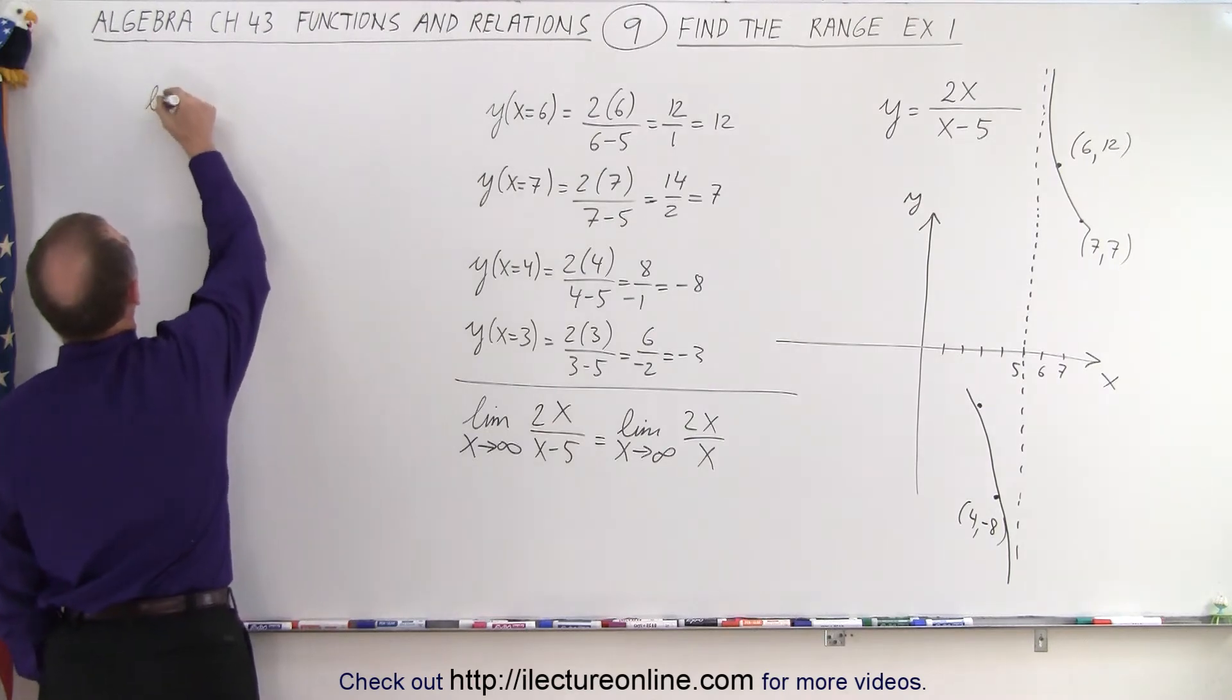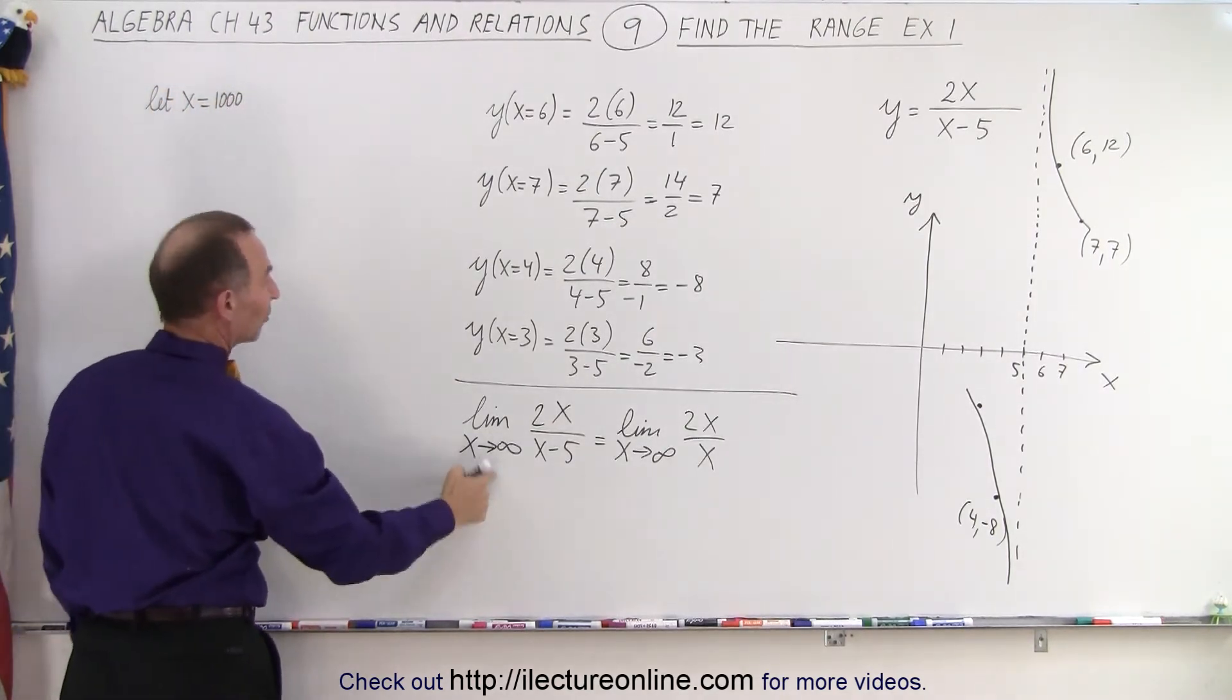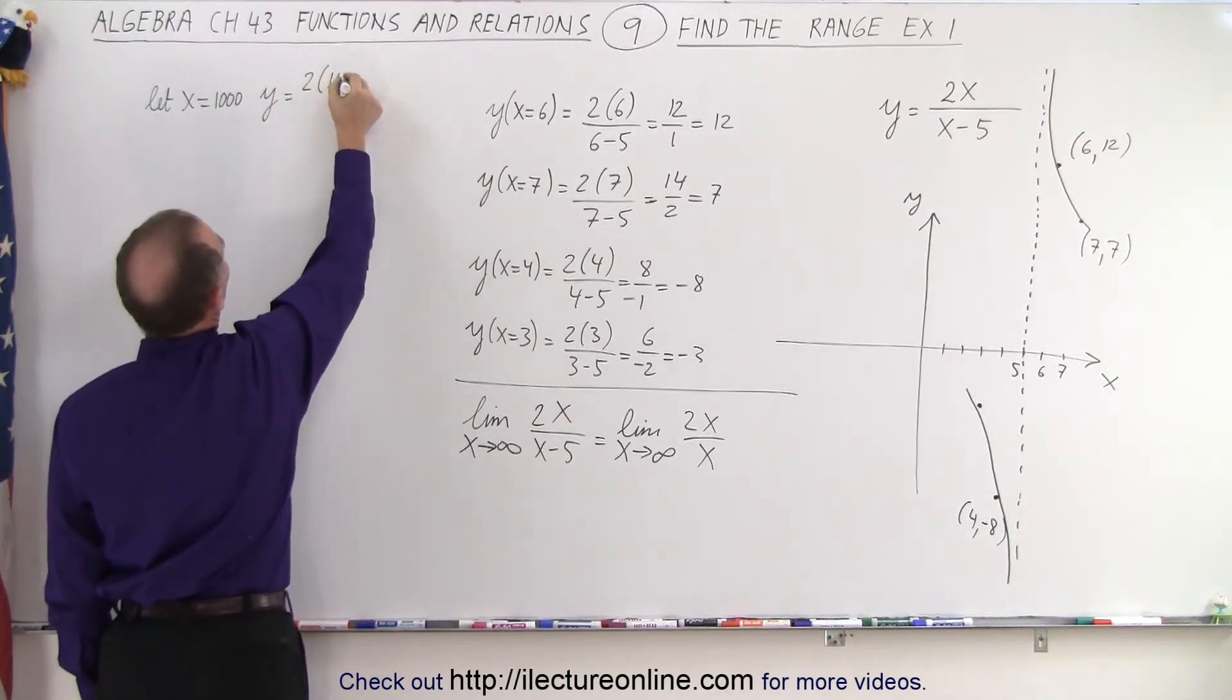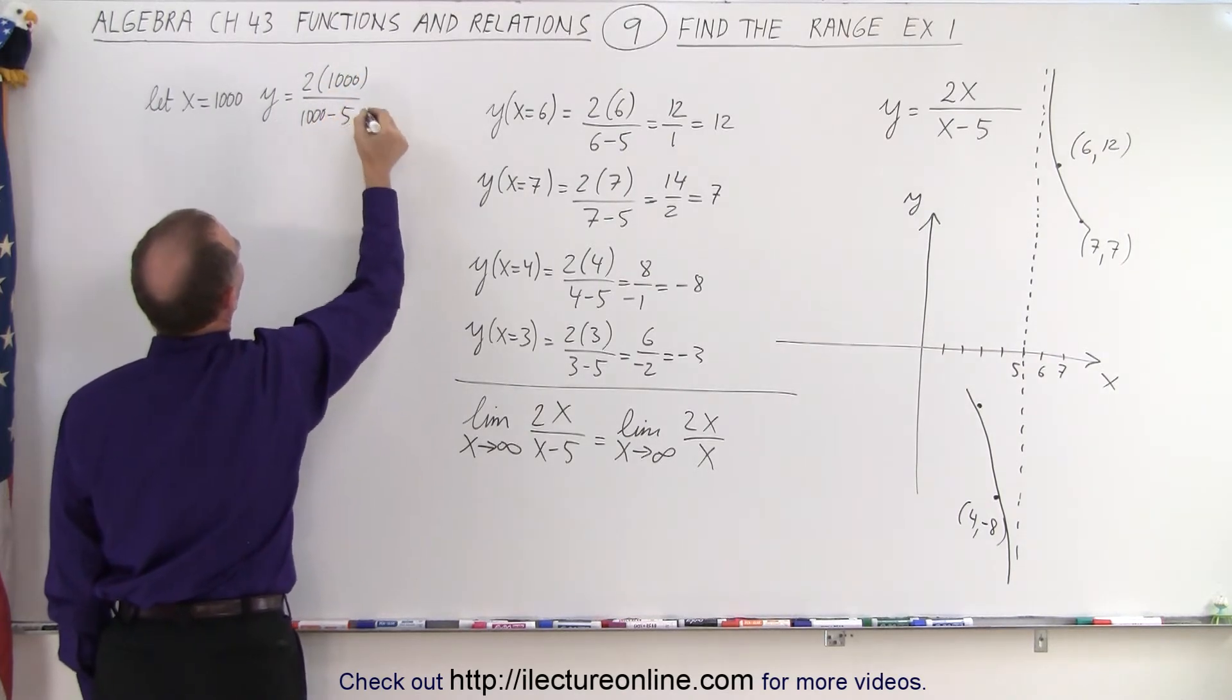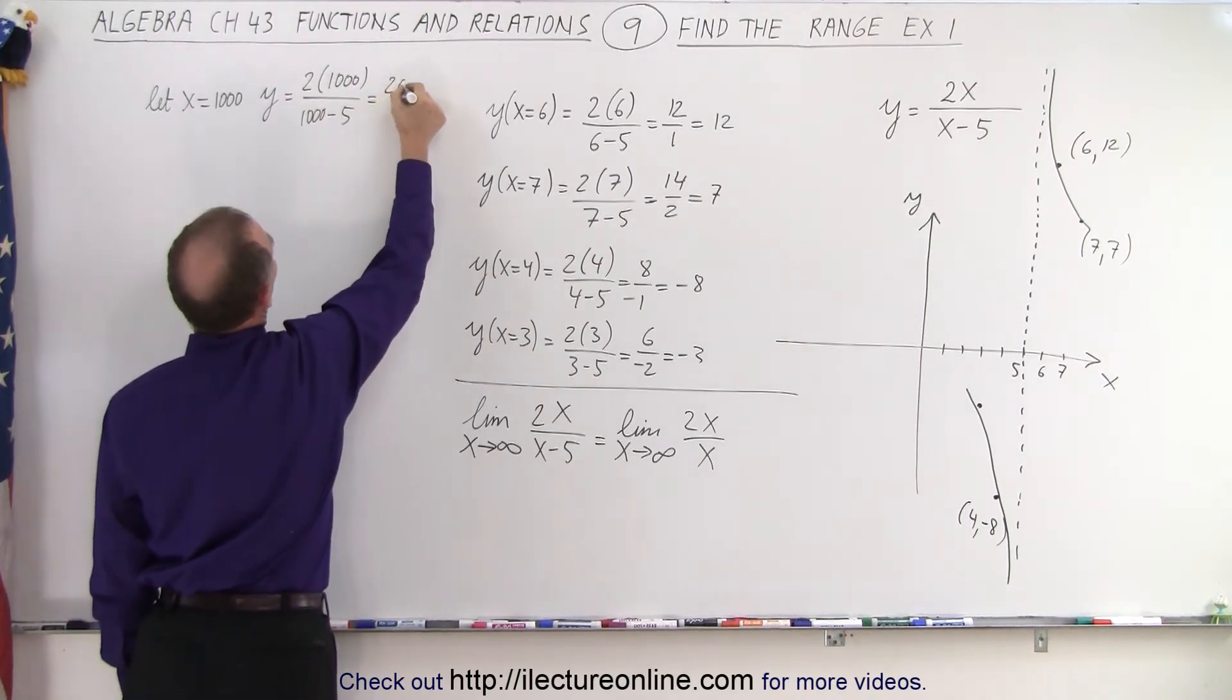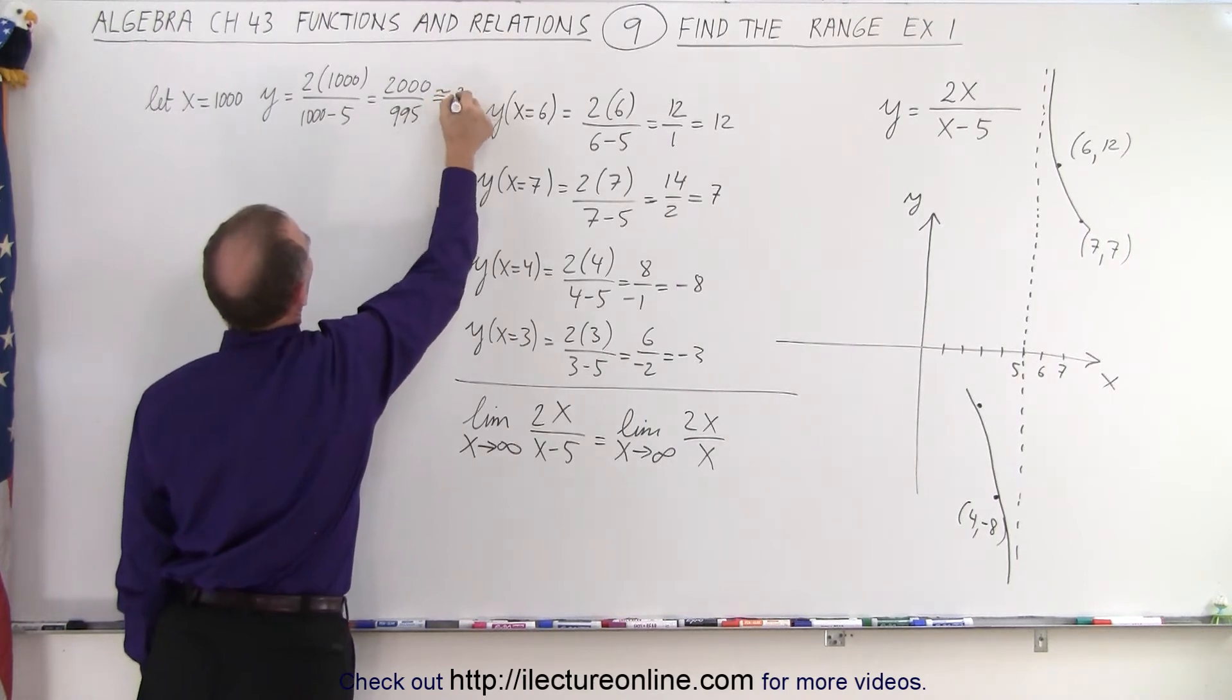So let x equal 1,000. Then the function becomes, then y is equal to 2 times 1,000 divided by 1,000 minus 5. And so that would be 2,000 over 995, which is about equal to 2.